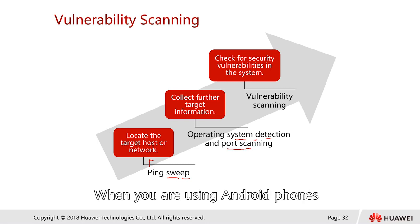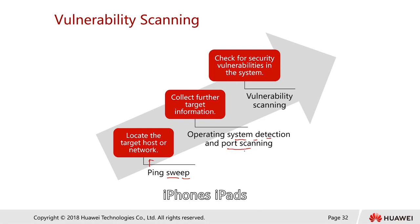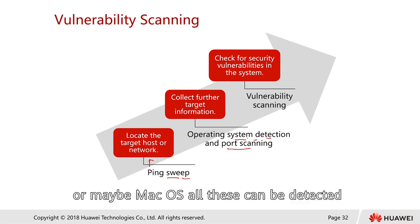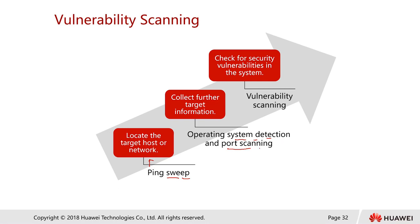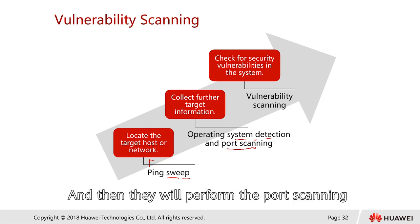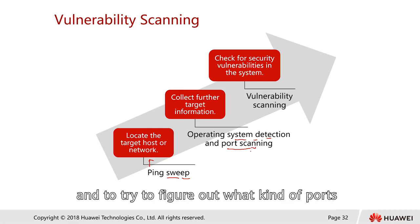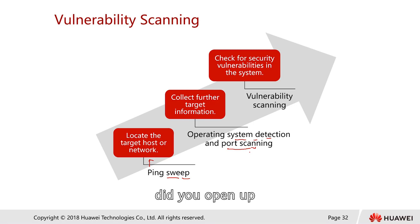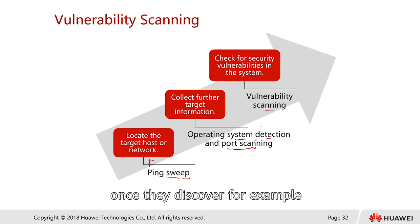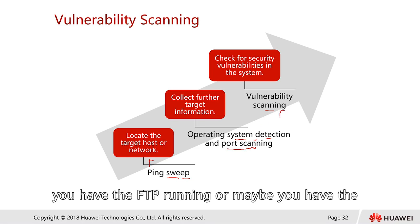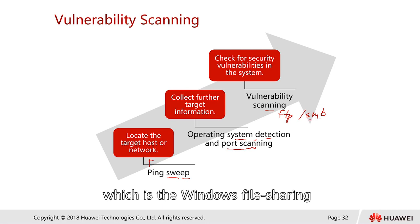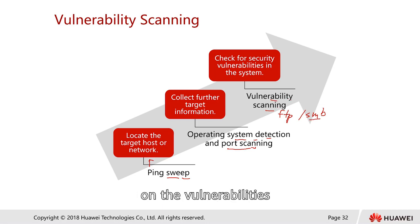They also try to detect what operating system is running in the environment — especially in hotels or public Wi-Fi locations. They can detect whether you are using an Android phone, iPhone, iPad, or Mac OS. Then they perform port scanning to figure out what ports are open. Once they discover open services like FTP or SMB (Windows file sharing), they check for vulnerabilities in those services.